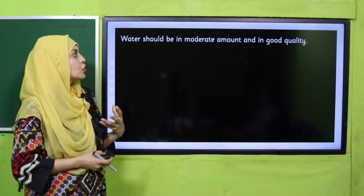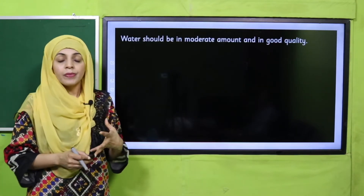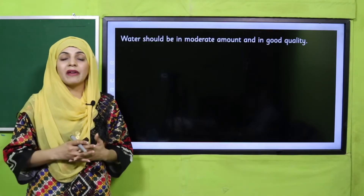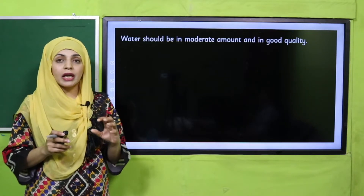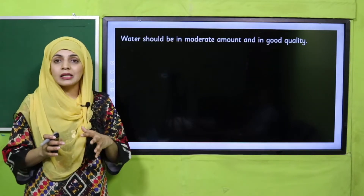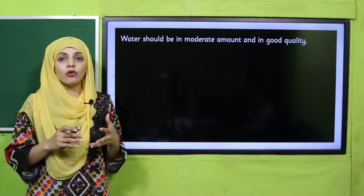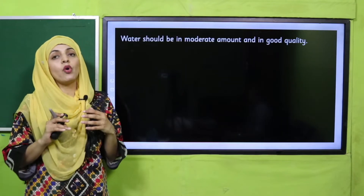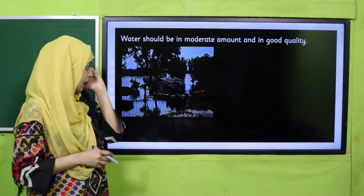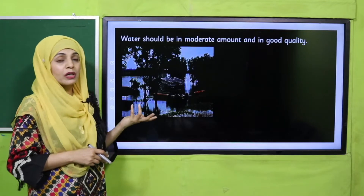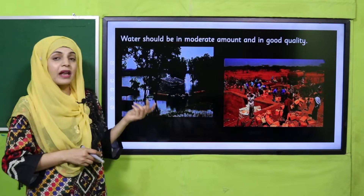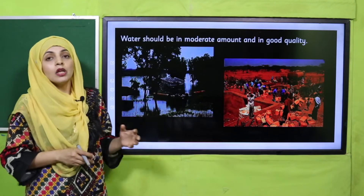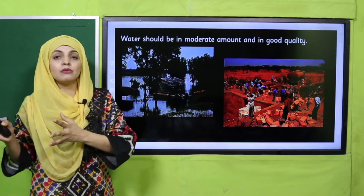Water should be in moderate amount and in good quality. Water is very important for the survival of plants and animals, so it should be moderate — it doesn't need to be floods. If there are floods, life will be destroyed. If there is everything in moderate amount, then plants and animals can survive. If there are floods, plants and animals will die. And if there is very little water — scarcity of water — again there will be no plants and no animals. So water needs to be moderate.